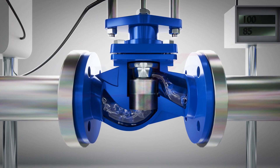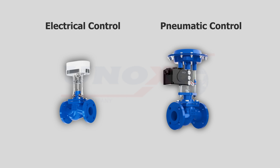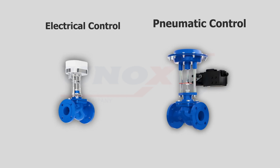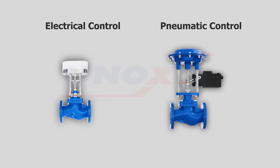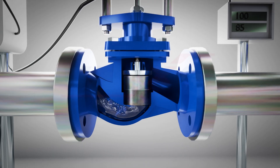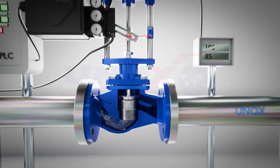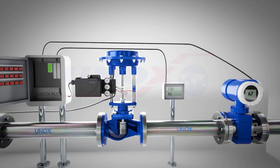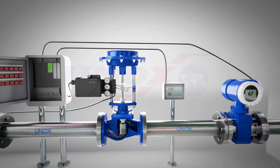A control valve can be operated by electrical or pneumatic control. A control valve receives a signal from a control device, such as a PLC, which enables it to move for throttling or opening the flow. A control valve can regulate temperature, pressure, or flow.